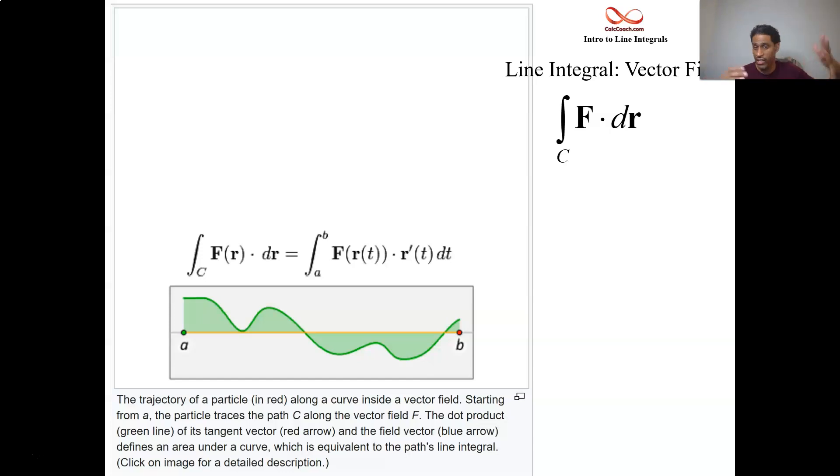We're going to write it in this format where F is a vector with multivariable functions in it as its i and j (perhaps k) components, and those multivariable functions we're going to call them P and Q. As far as dr goes, r is a vector that has x and y as the i component and y as the j component, functions of t.